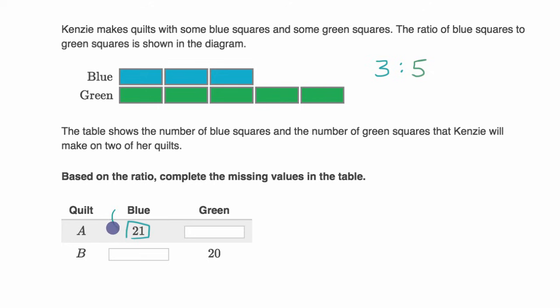How many green squares would she have? Well, to go from three to 21, you have to multiply by seven. And so you would take five and then multiply that by seven to get to 35. As long as you multiply both of these by the same number or divide them by the same number, you're going to get an equivalent ratio. So 21 to 35 is the same thing as three to five.